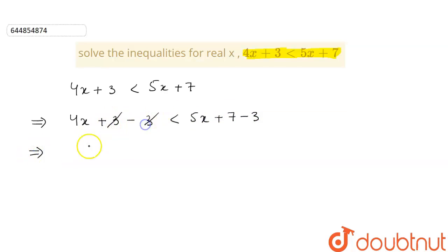This will give us, we see that this and this will get cancelled. So we will be left with 4x is less than 5x plus 4.